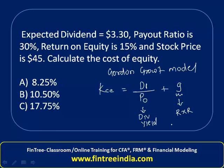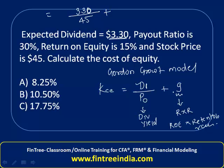An easy way to remember the growth rate formula is ROE multiplied by the retention rate. So step by step: D1 = 3.30, price of stock = 45. The growth rate is calculated by multiplying ROE (return on equity) by the retention rate. ROE is given as 15%.